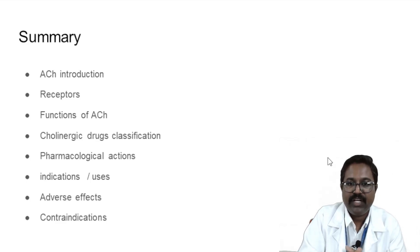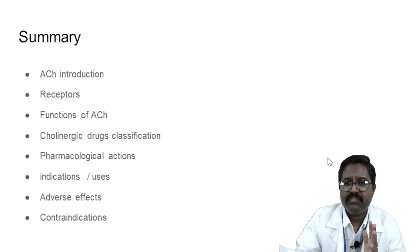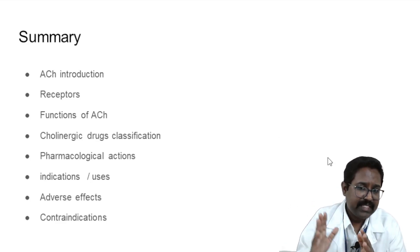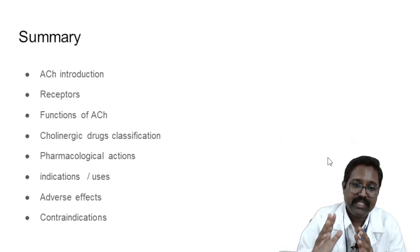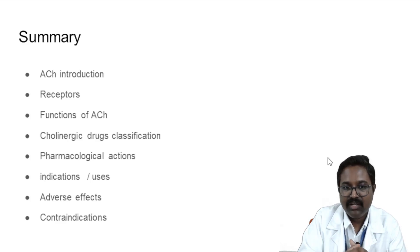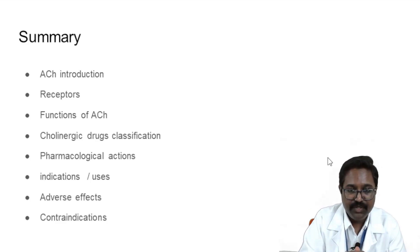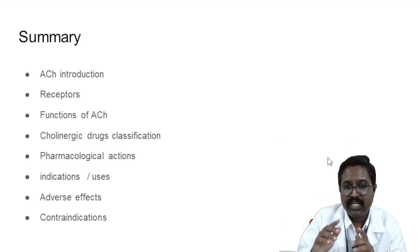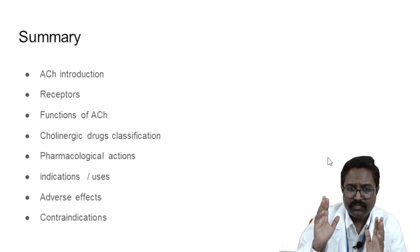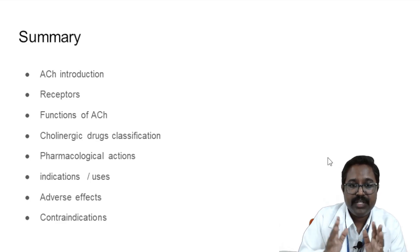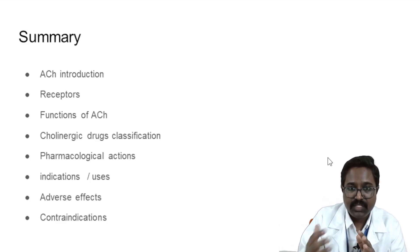In summary, this class covered: what is acetylcholine, the receptors involved in acetylcholine functions, the important functions of acetylcholine, whether acetylcholine is used clinically (it is not), cholinergic drug classification into direct and indirect, pharmacological actions of direct and indirect drugs, indications and uses, adverse effects, and contraindications. The acetylcholine action on the neuromuscular junction will be discussed in a separate class covering how acetylcholine acts on the neuromuscular junction and its uses there. Thank you.